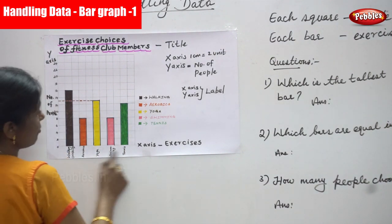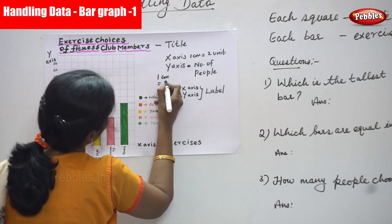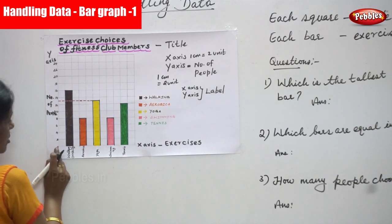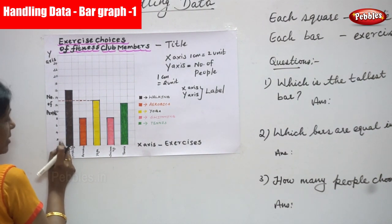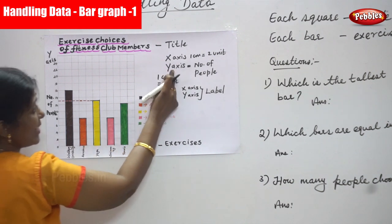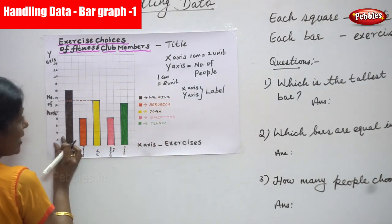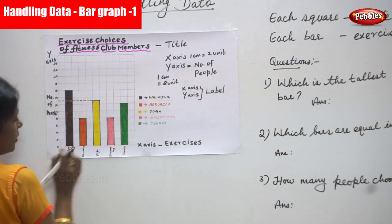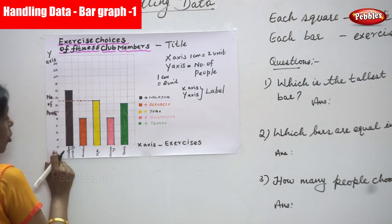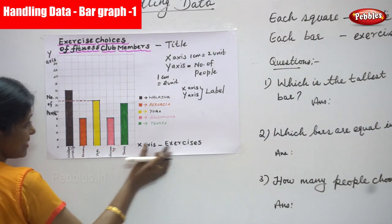On the y-axis, one centimeter is equal to two units. So each square represents two units. The scale goes: 0, 2, 4, 6, 8, 10, 12, 14, 16. Y-axis: one centimeter equals two units, meaning each square is two units.